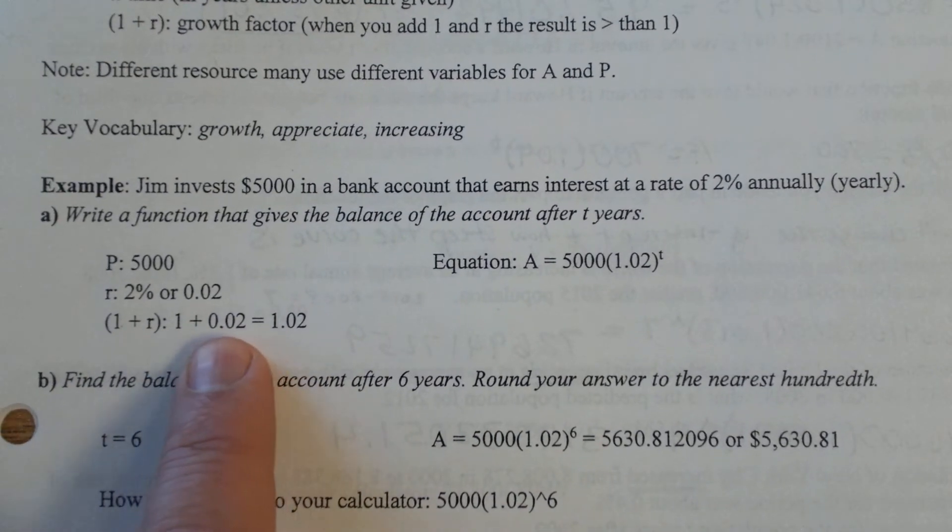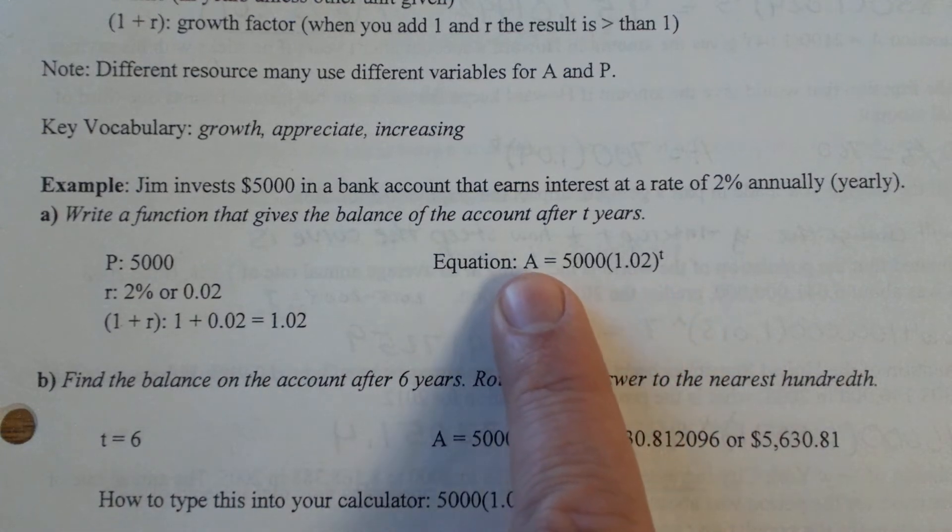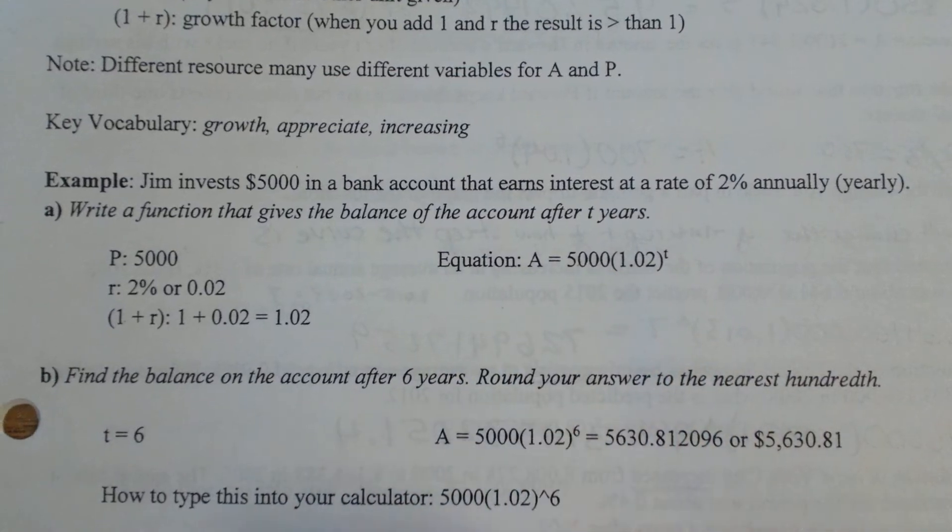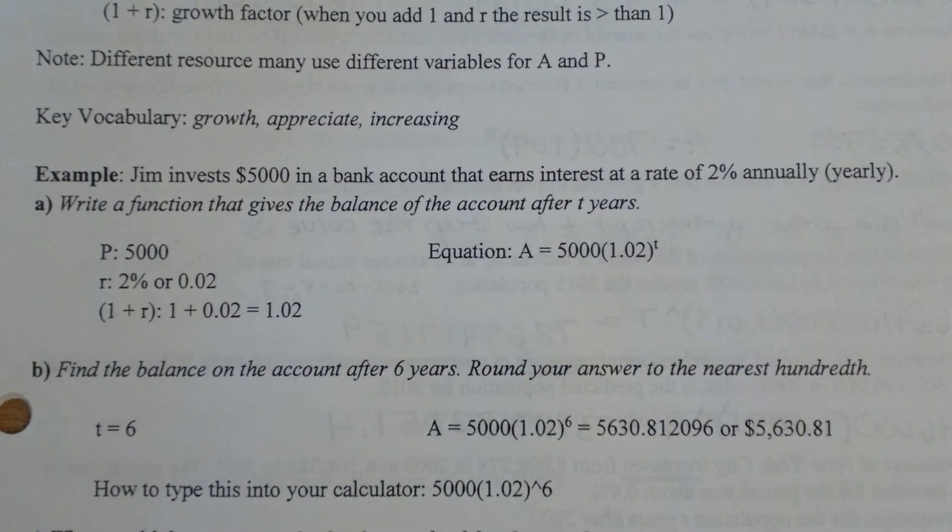And you don't want to write it with the plus sign in your equation, you want to simplify it down to just that single number 1.02. So this would be your exponential growth equation for Jim's investment. A lot of times they'll have you write the equation to start and then test it out for different years.